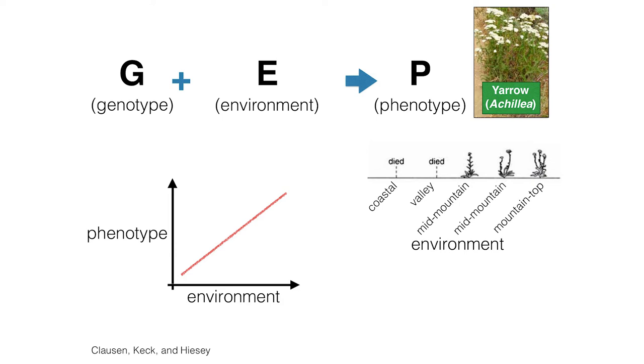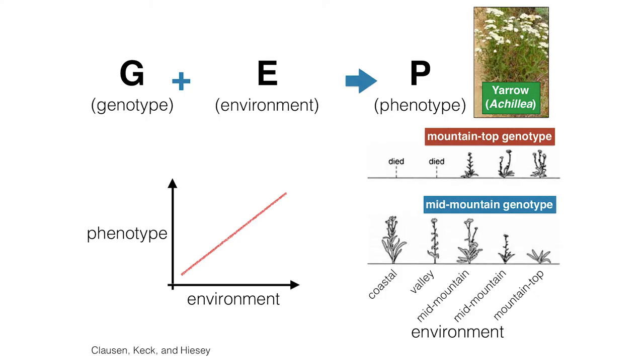You can visualize this with a graph where a phenotype changes across environments. There's been some beautiful work since Darwin to understand this relationship. For example, data from a big experiment on yarrow plants in California — stretching from the coast inland through the mountains up into the high Sierras. You can take plants, plant them on the coast, in the valley, up in the mountains, and compare how they grow. This particular yarrow cannot grow near the ocean — they die at the coast and in the valley; you have to put them up in the mountains to survive.